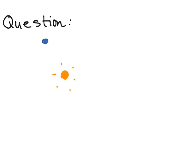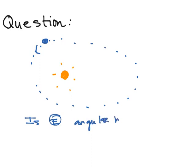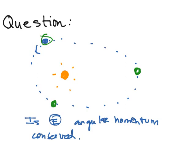Here's a question to leave you with: the Earth travels around the Sun not in a perfect circle but in an elliptical, egg-shaped pattern. As Earth travels around the Sun, is the Earth's angular momentum conserved? Pause the video and try to answer that question for yourself — is angular momentum the same at different points along the orbit? The Earth's speed is definitely changing as its potential energy changes, but is its angular momentum conserved?